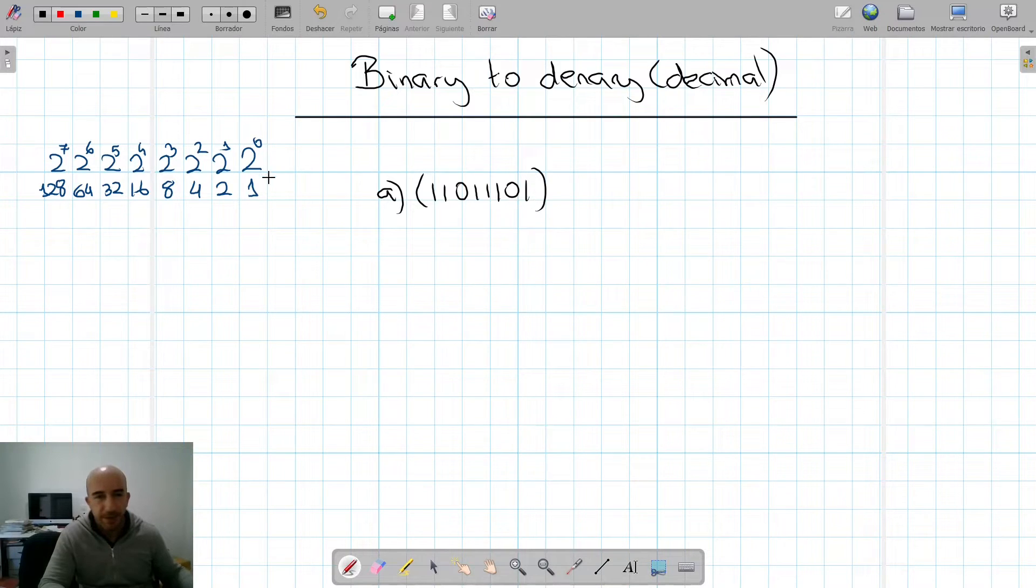So we have to convert in this exercise the following number. So we have 1, 2, 3, 4, 5, 6, 7, 8 bits. We have enough. So we want to convert this from the binary system to the denary system, which is base 10. So what are we going to do? The first thing, we're going to write those values down.